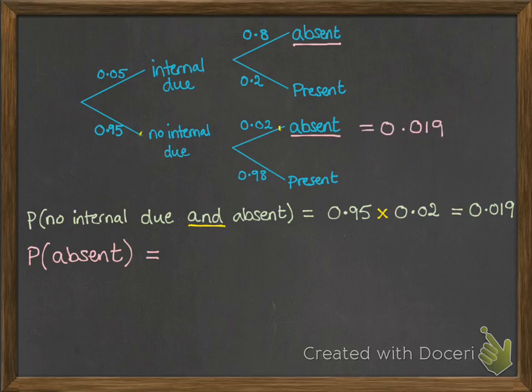This one here will be the 0.05 times 0.8 to represent a day where he has an internal due and is absent.